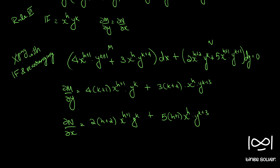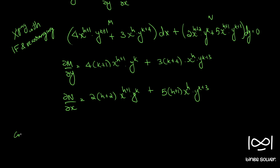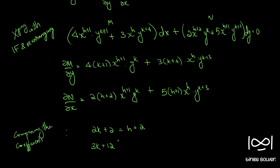Since the equation is exact, ∂M/∂y = ∂N/∂x. Comparing coefficients of x^(h+1)·y^k: 4(k+1) = 2(h+2), so the 2s cancel giving 2k+2 = h+2, which simplifies to h − 2k = 0. This is our first equation.